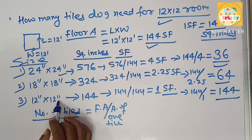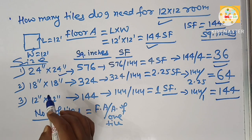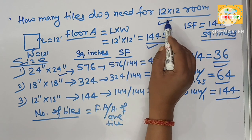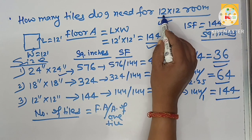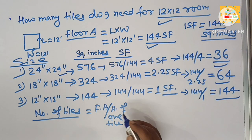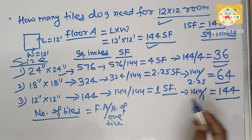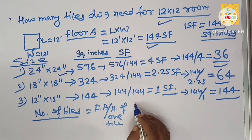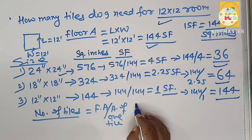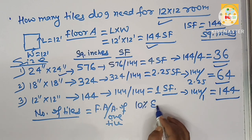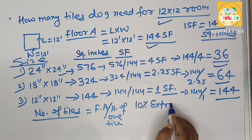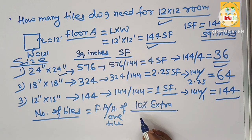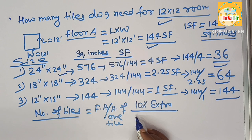This is your answer for covering the tile flooring of a 12 by 12 room. Our recommendation is to always buy 10 percent extra tiles for further use, as some may be damaged during transportation, storage, or installation.